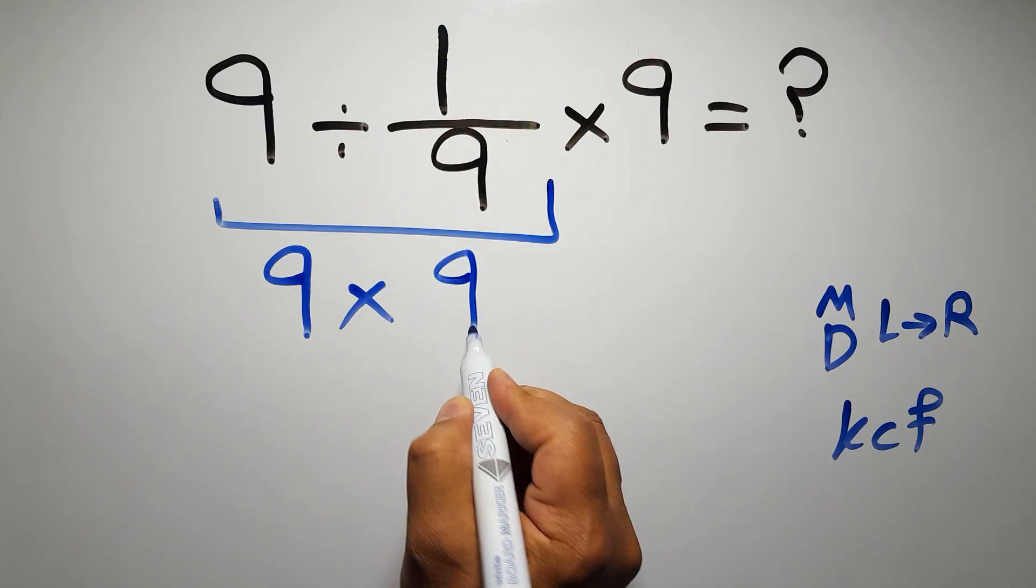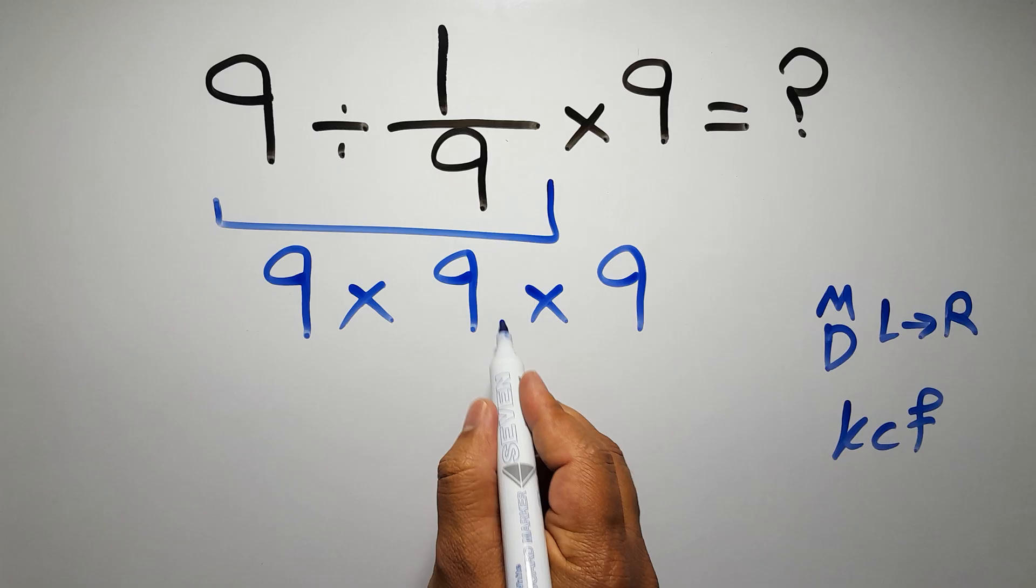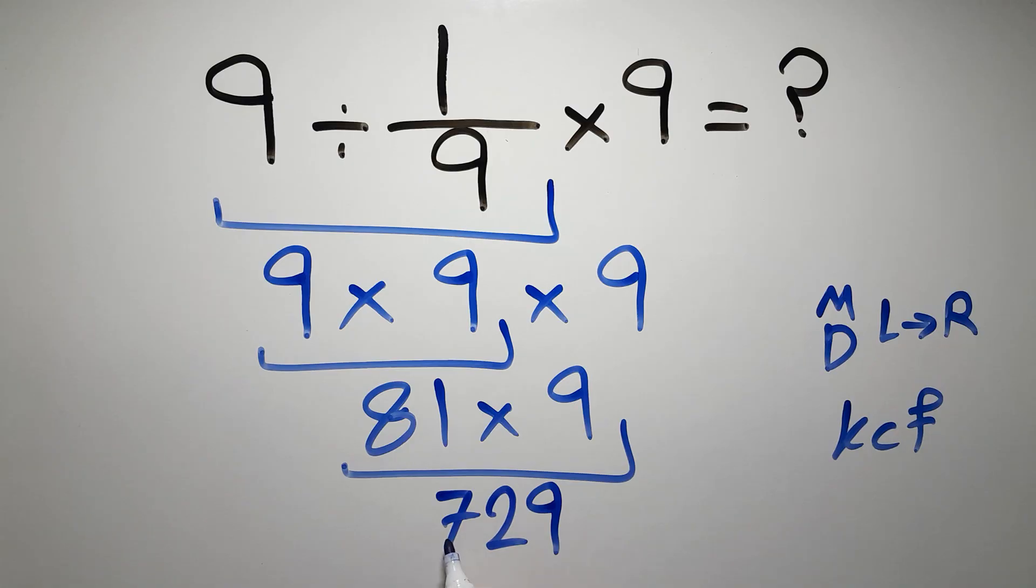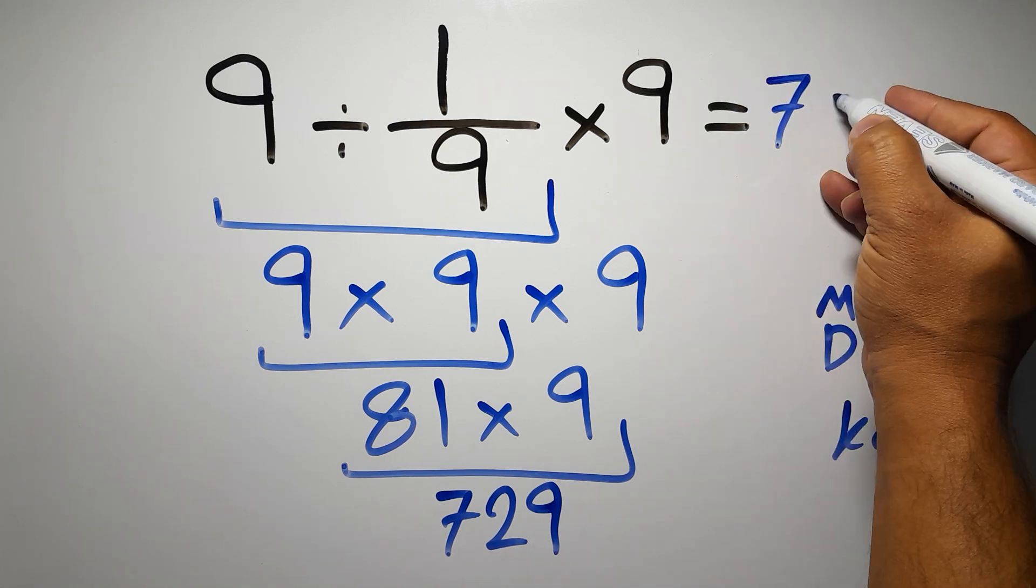And again here we have times 9. 9 times 9 gives us 81, and 81 times 9 equals... 9 times 1 gives us 9, and 9 times 8 gives us 72, so we have 729. And this is our final answer to this problem. The correct answer is 729.